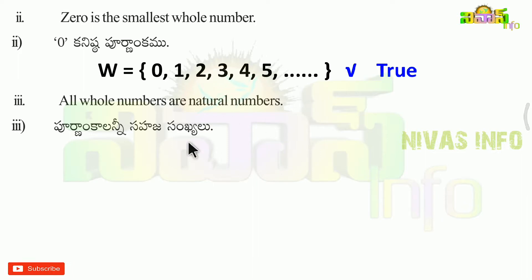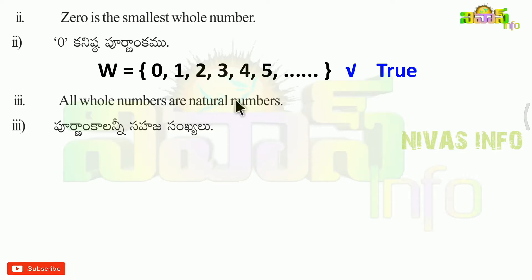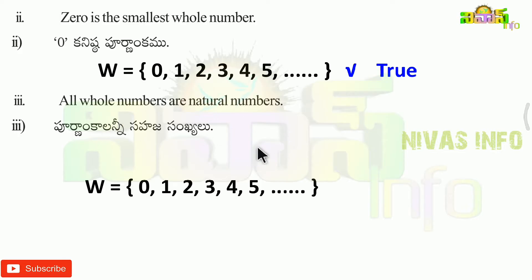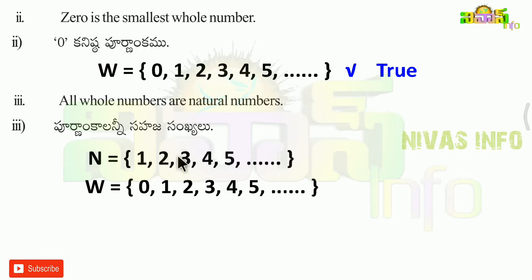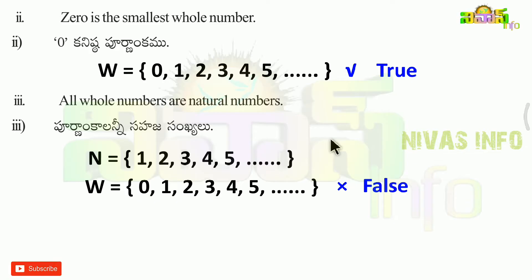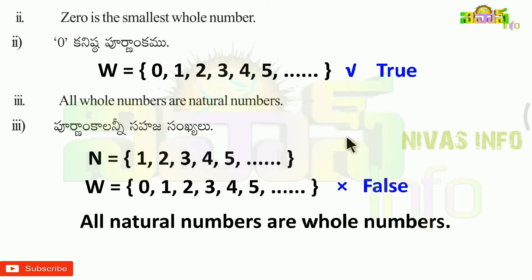Next problem: all whole numbers are natural numbers. Whole numbers include 0, but natural numbers start from 1, so 0 is not a natural number. Therefore the statement is false. The correct statement is: all natural numbers are whole numbers.